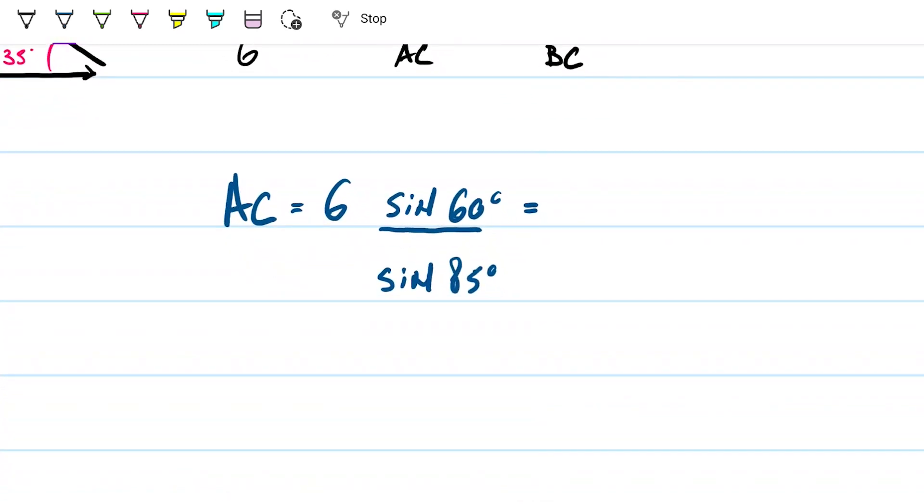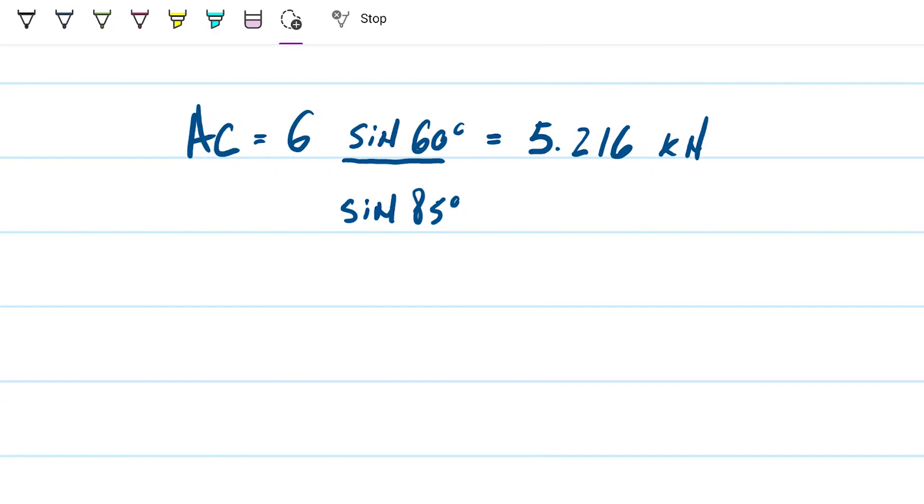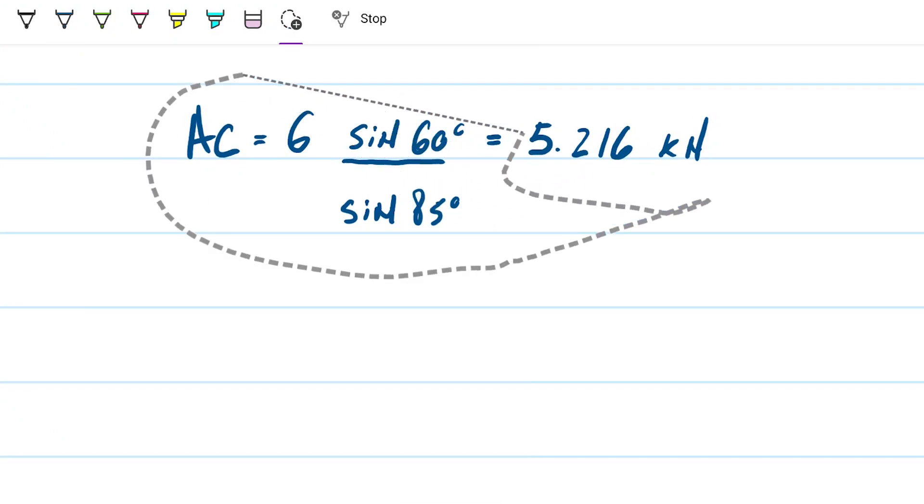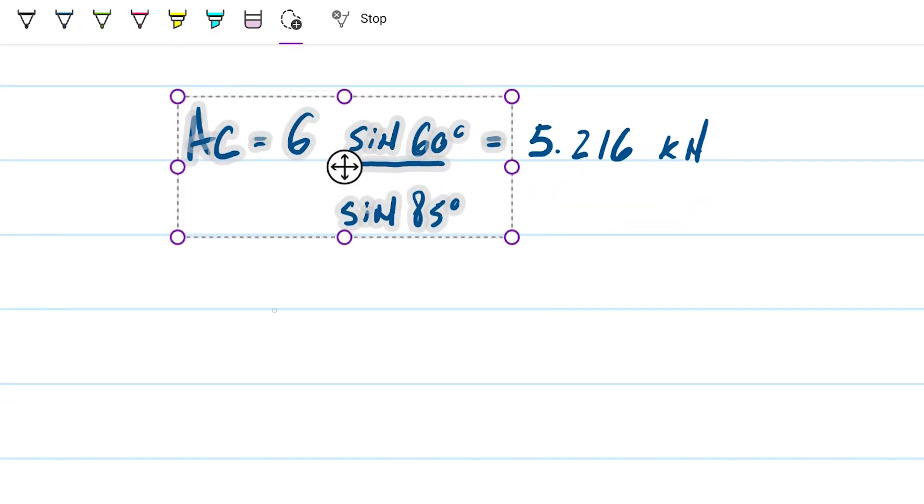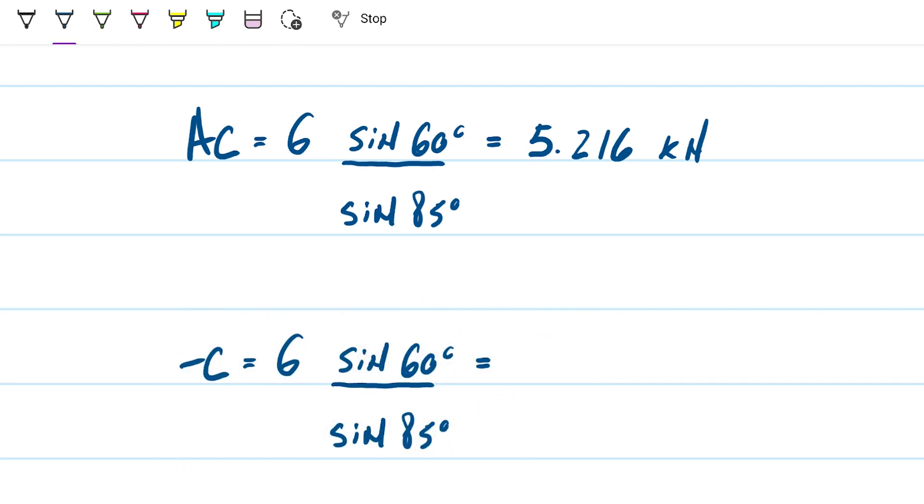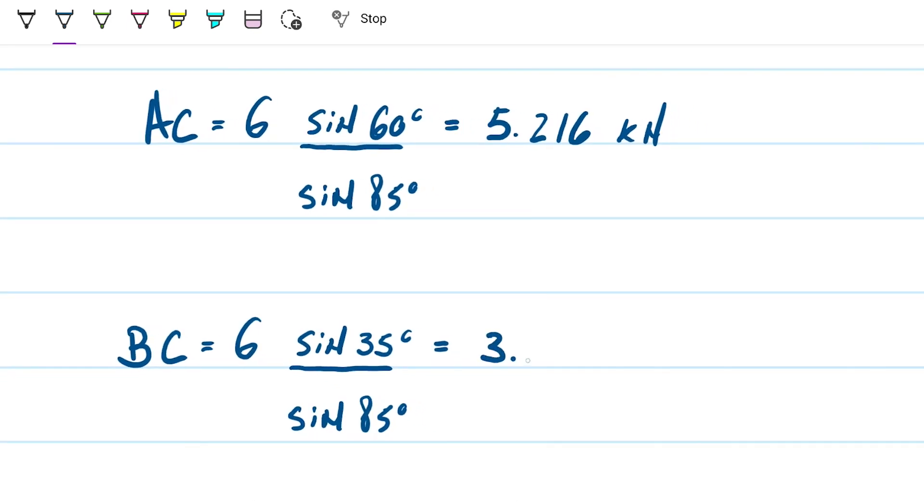Which gives me 5.216, same unit, kilonewtons. And then we're going to do the lazy thing here, which is I copy this out here and I'm going to say that BC would be this but then the sine of 35, and that gives me 3.455 kilonewtons. And there you go, those are your answers.